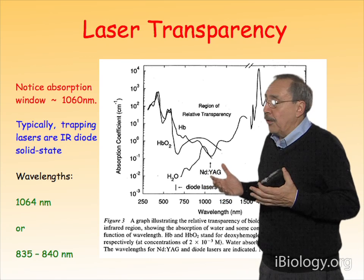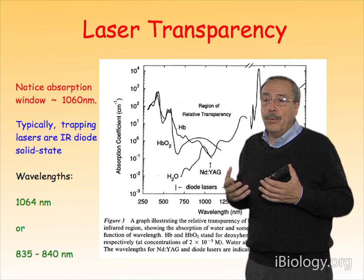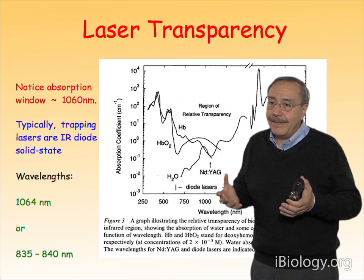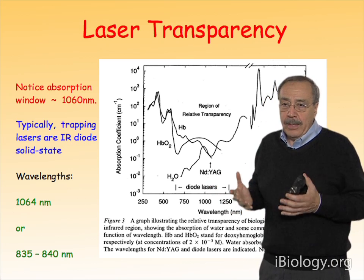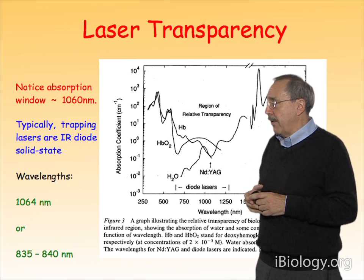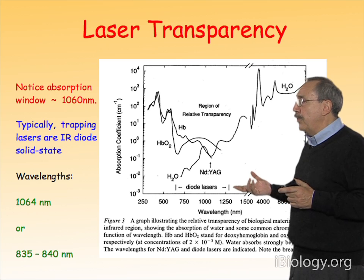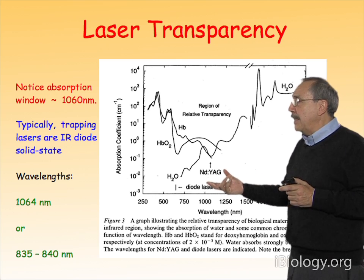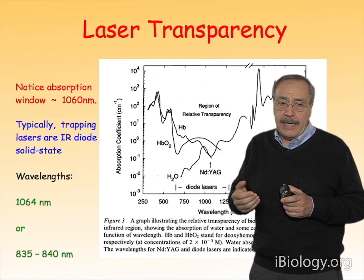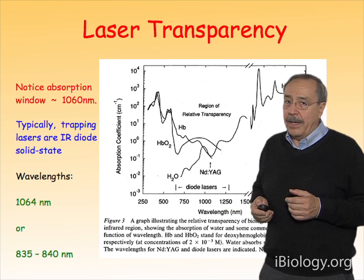This is what we call the absorption window of biological materials, assuming biological materials contain water. This is important because when we are trying to manipulate biological molecules, cells, or organelles inside cells, we want to minimize the amount of light absorbed in order to minimize the damage done by radiation. These days, most laser optical tweezers applications use diode lasers, which are solid-state lasers functioning in the wavelength regime between 835 and 840 nanometers — a good compromise to trap with minimal damage to biological samples.